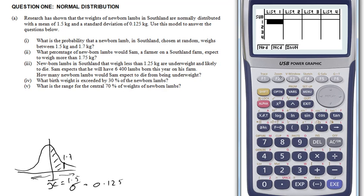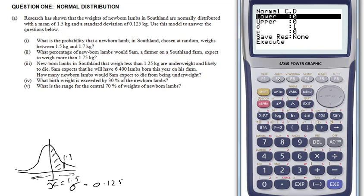So I'm doing an NCD, so let's choose that and it asks for a lower and upper, standard deviation, and mean. So in this case my lower is 1.5 kg because it's the smallest number I can get. My upper is 1.7 kg, my standard deviation is 0.125 kg, and my mean is 1.5 kg.